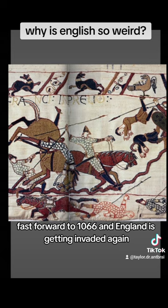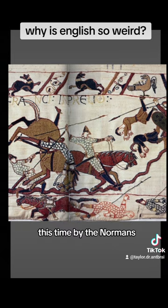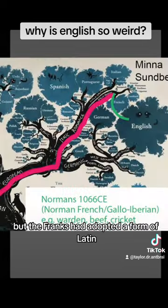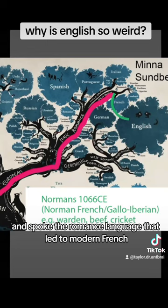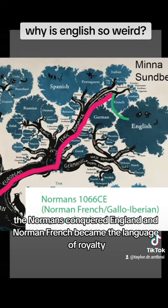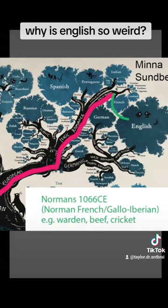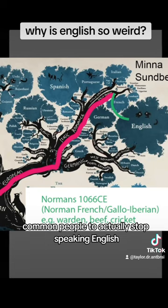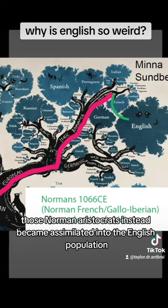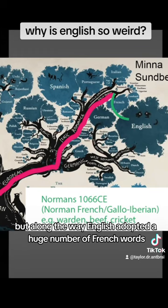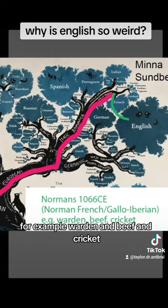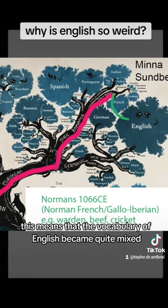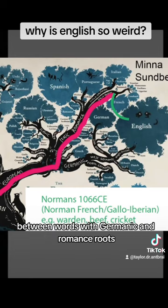Fast forward to 1066, and England is getting invaded again, this time by the Normans. Normans were a subgroup of the Franks, yet another Germanic tribe, but the Franks had adopted a form of Latin and spoke the Romance language that led to modern French. The Normans conquered England, and Norman French became the language of royalty. However, the influence of French speakers was never enough to get common people to actually stop speaking English, and eventually those Norman aristocrats instead became assimilated into the English population. But along the way, English adopted a huge number of French words — for example, warden and beef and cricket. Since French is descended from Latin, this means that the vocabulary of English became quite mixed between words with Germanic and Romance roots.